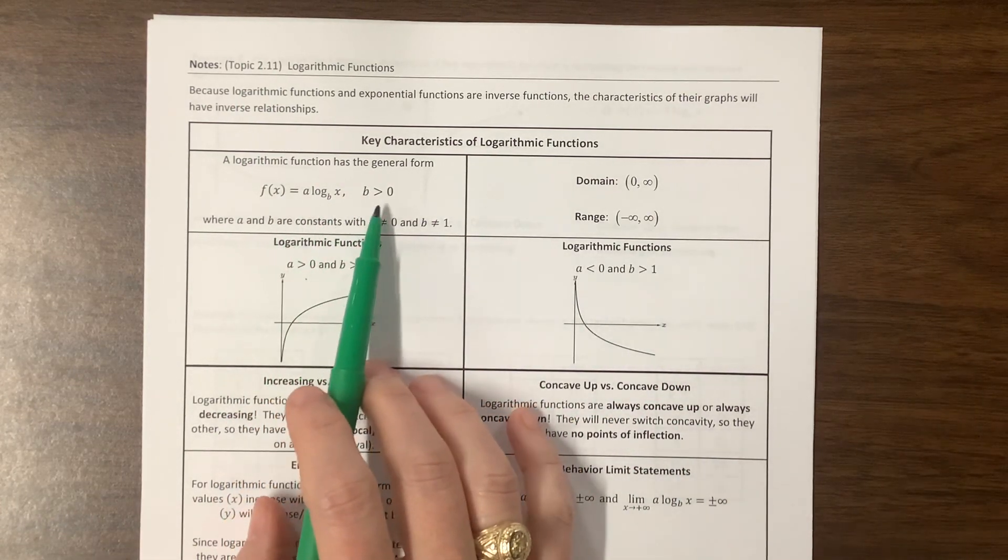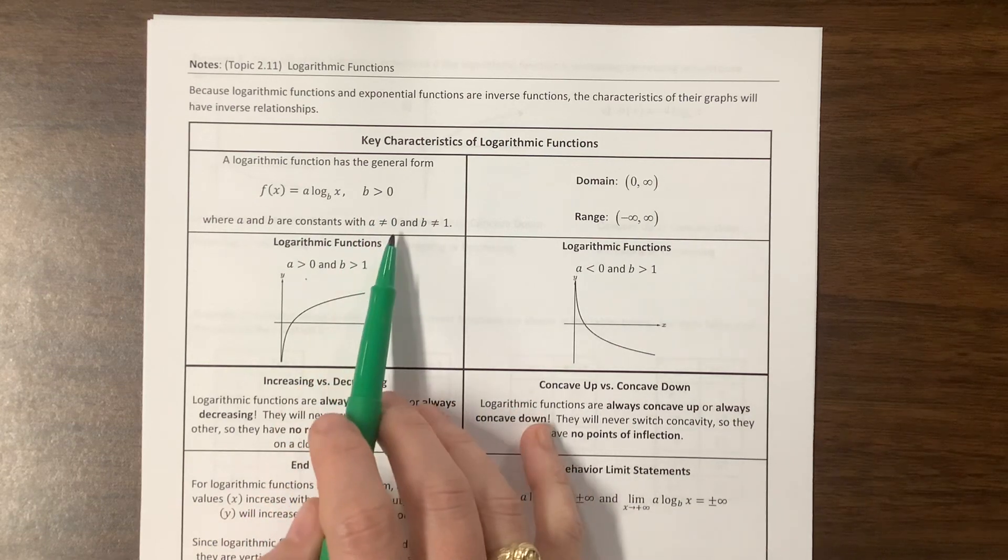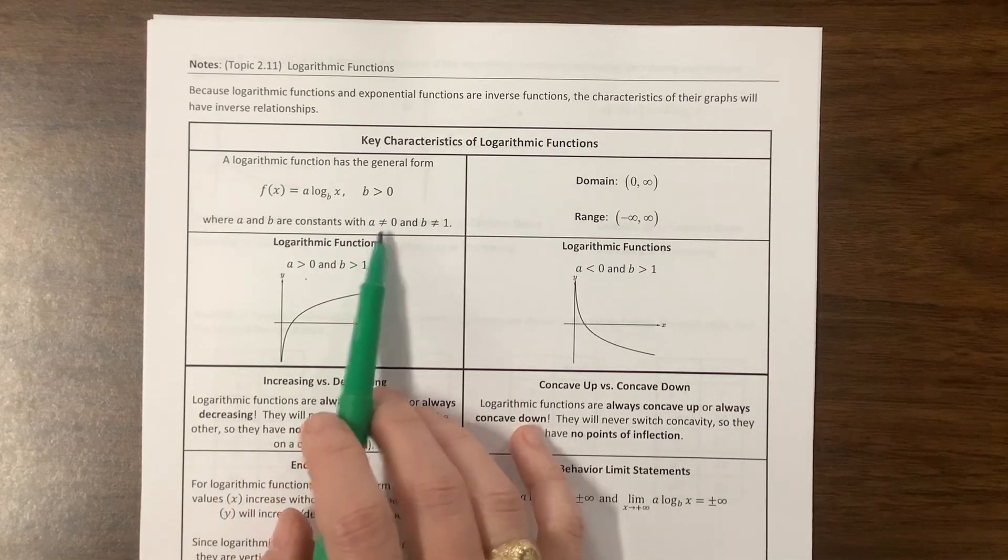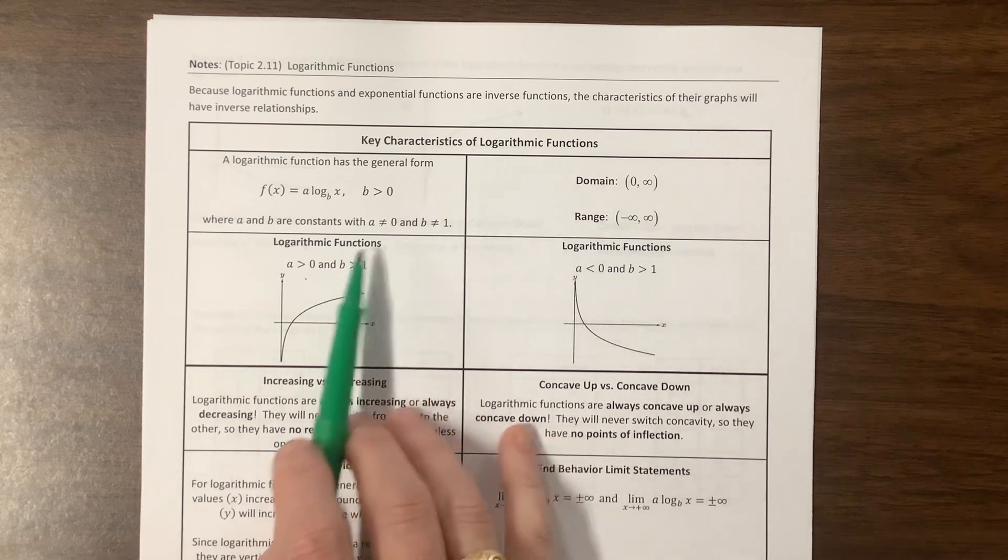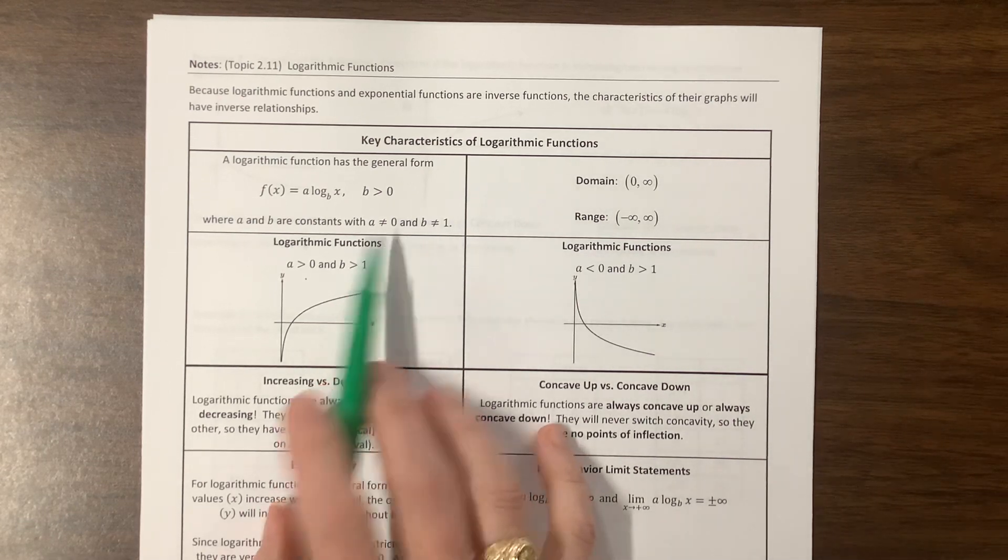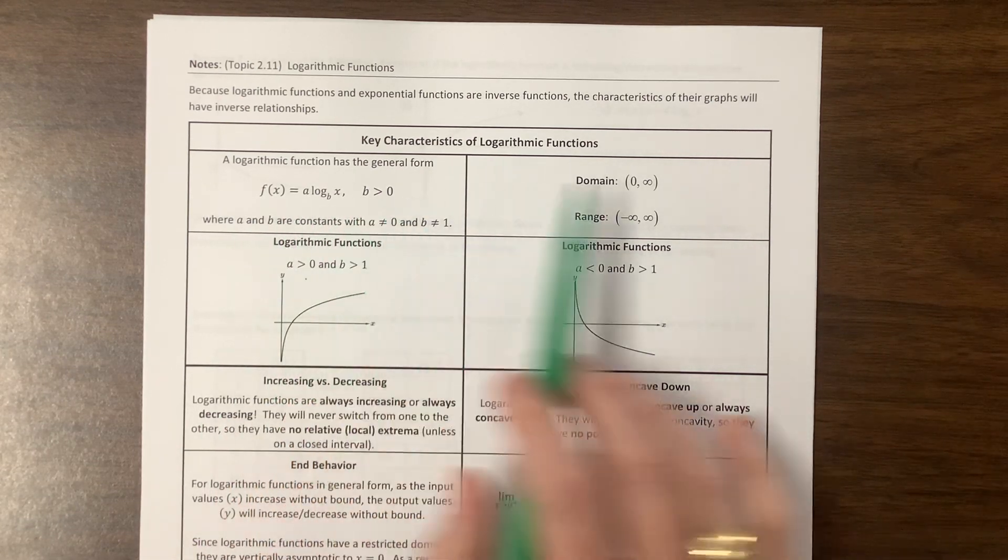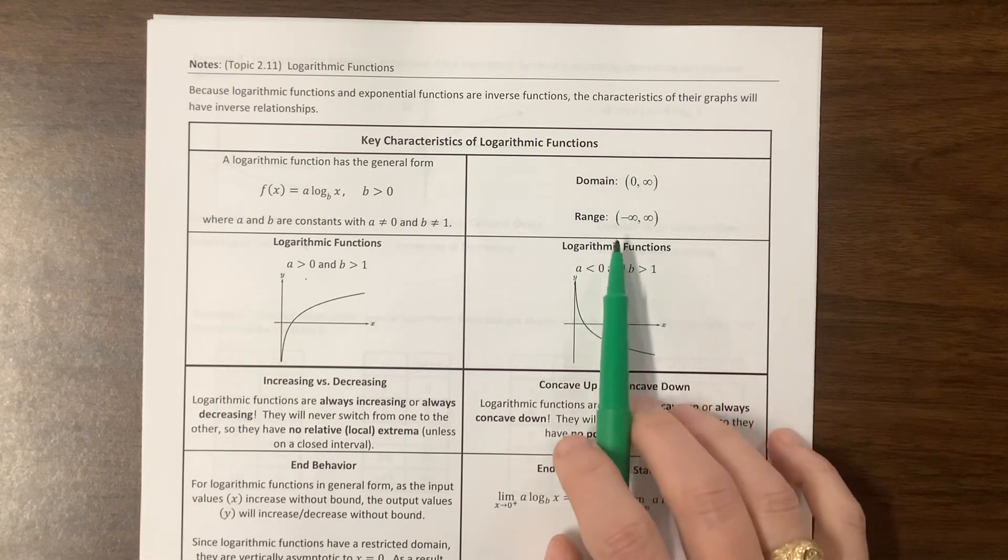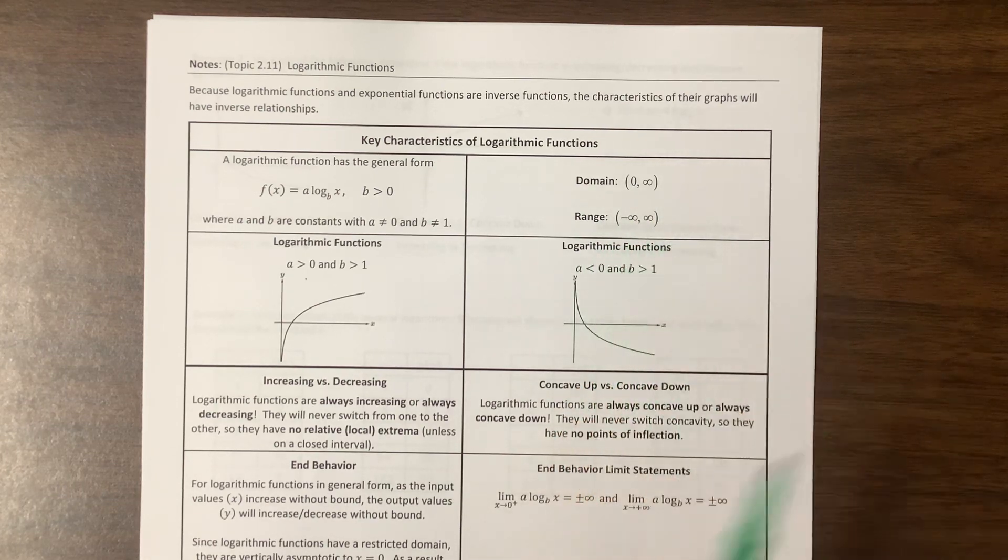So we've talked about a number of these things. We've talked about how, yes, sure enough, they fixed it here. A can't equal zero, B can't equal one. If that didn't make sense to you, go back and watch my 2.10 video. And then the domain we just said was going to be zero to infinity. The range is negative infinity to infinity.